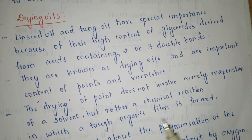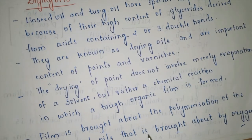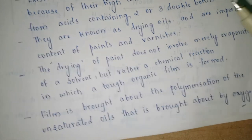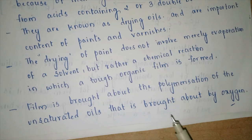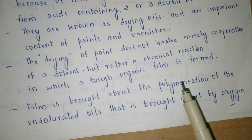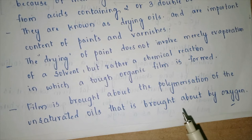The drying of paint does not simply involve evaporation of a solvent but is a chemical reaction in which a tough organic film is formed. The film is brought about by polymerization of the unsaturated oils, initiated by atmospheric oxygen reacting with linseed oil and tung oil, forming an organic layer that dries — as seen in the painting and varnishes industry.